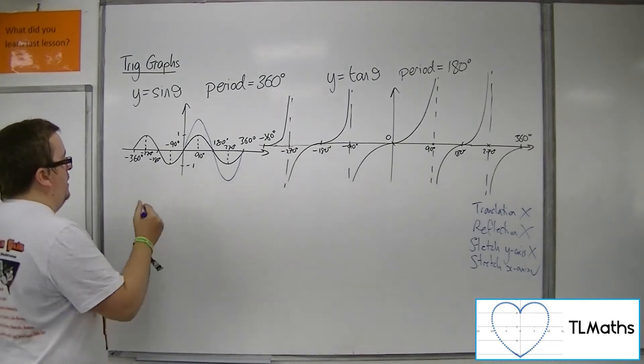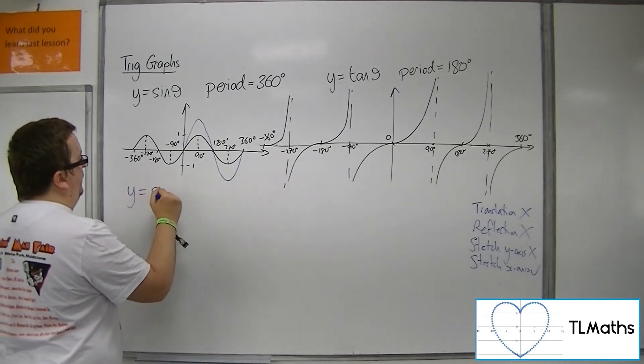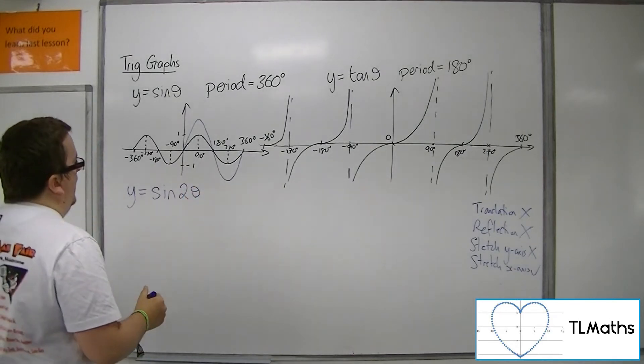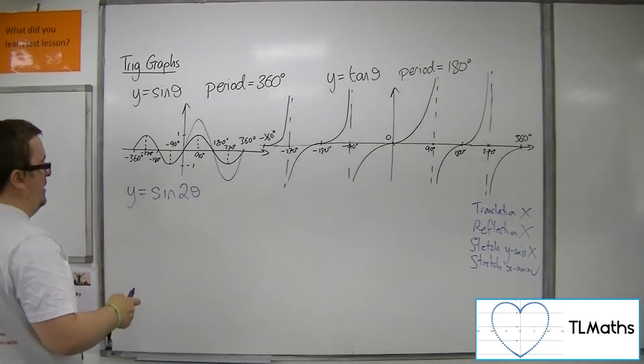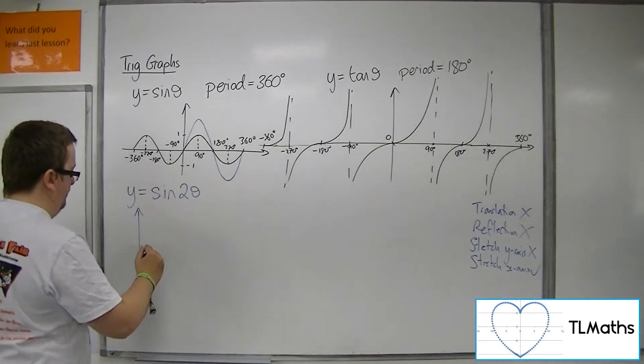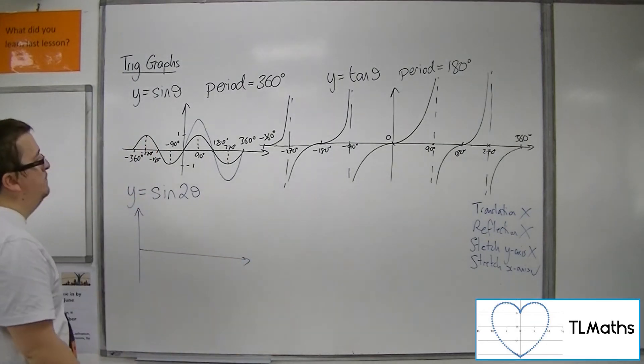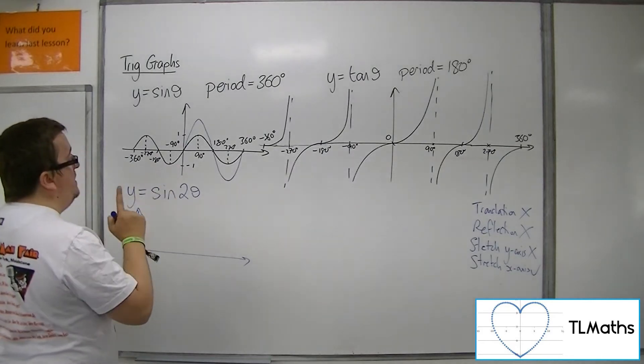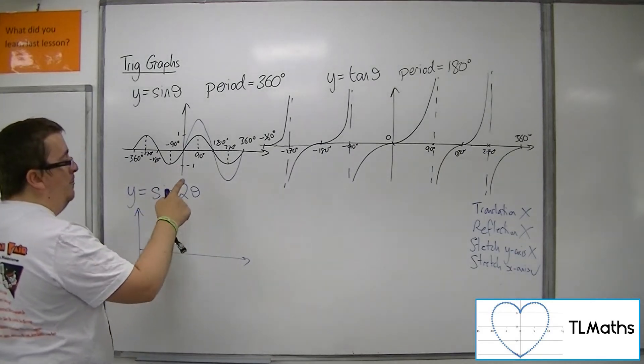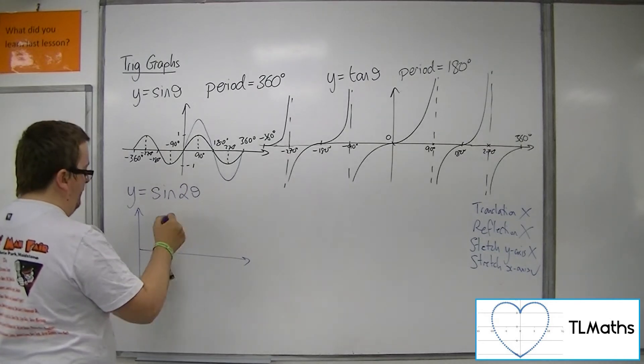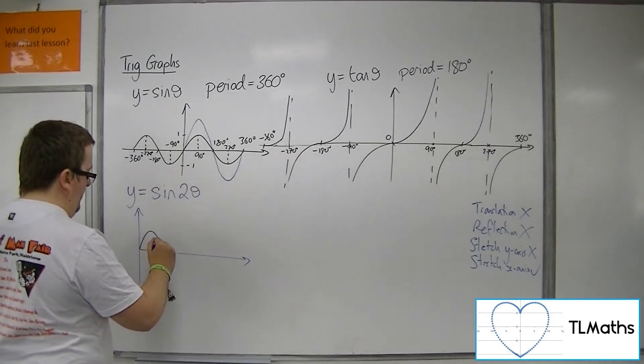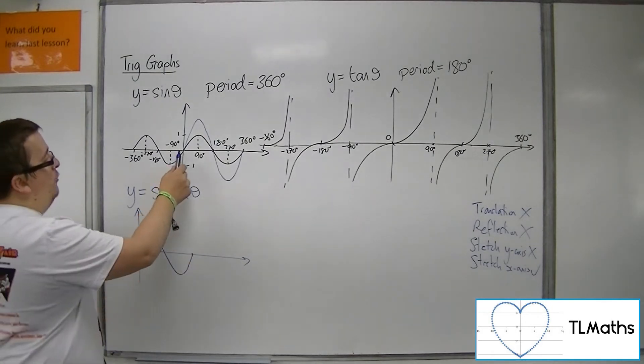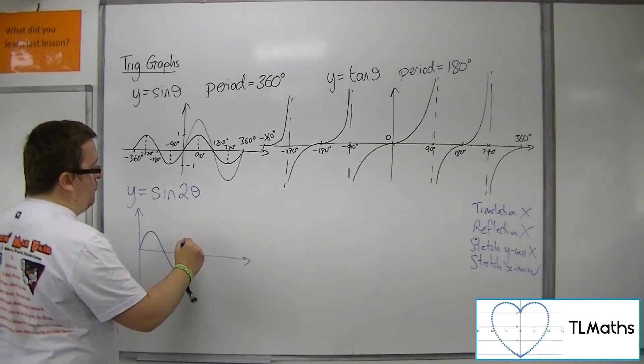So if I was to draw y equals sine of 2 theta, and if I just looked at the part that's to the right of the y-axis, then the curve would now, because that's a stretch parallel to the x-axis factor 1 half, what will happen is the curve will now not go from 0 to 360 but 0 to 180.